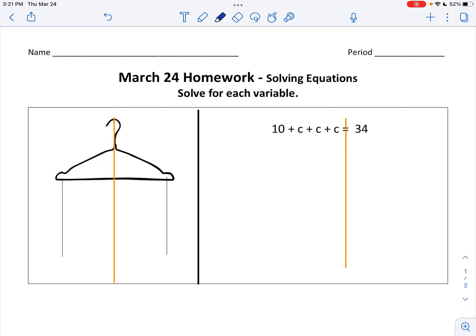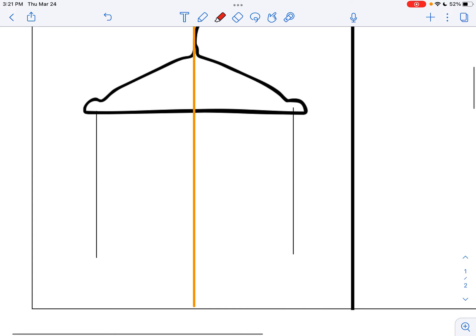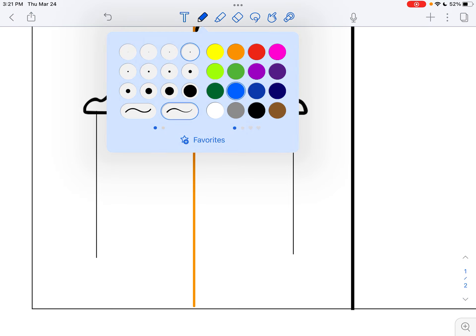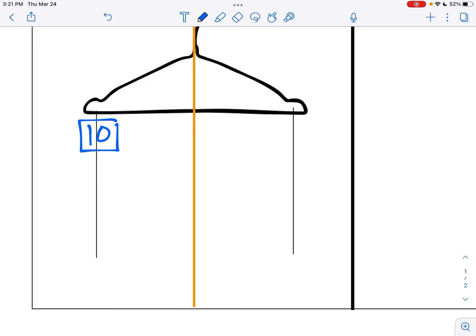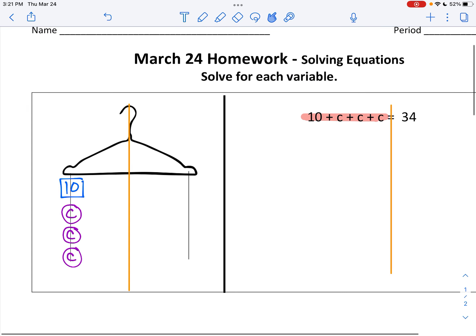Then I'm going to look at what's on the left side of my equation. It says 10 plus C plus C plus C, and I'm going to write that here on the left side of my hanger. 10 plus C plus C plus C, and then I'm just going to double check that that matches. Yep, it does.